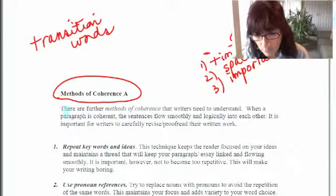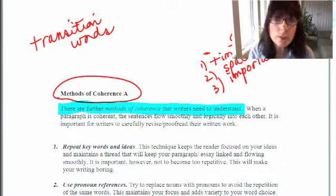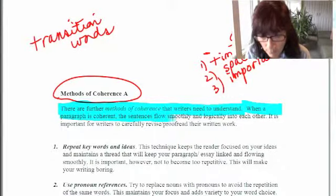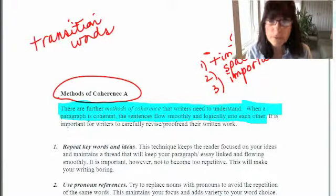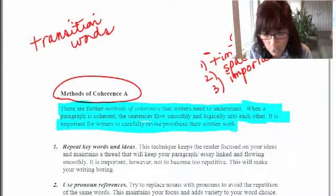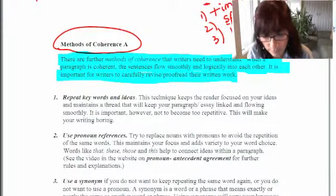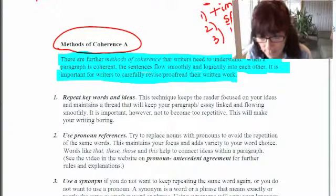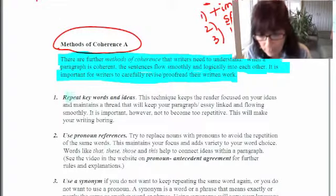If you would like to follow along, I'm going to teach you other methods of coherence that you can use in your writing to make your ideas flow. Keep in mind that when a paragraph is coherent, the sentences will all flow smoothly into each other, making one nice written unit. It's important for writers to revise and proofread their work to ensure all ideas flow and that your reader understands what you have written. Here are some pointers with examples and links to other videos to help you.